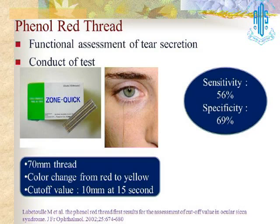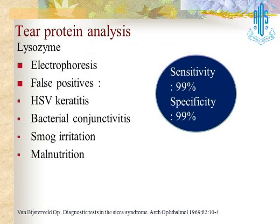There are certain other tests we should be acquainted with. One is the phenol red thread — we place this thread at the junction of the outer one-third and inner two-thirds, and there is a change of pH which gives us the quantification of the condition. Then, of course, tear protein analysis like enzyme analysis — this is a very specific test with very high sensitivity, but less available with most of us.